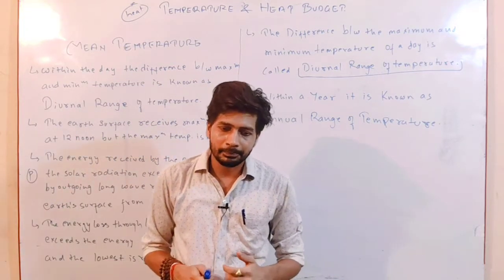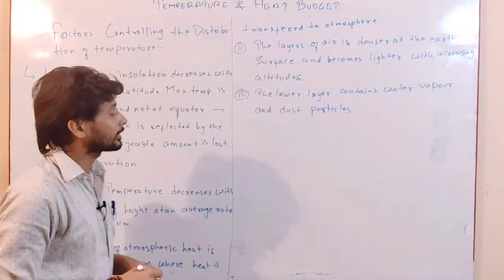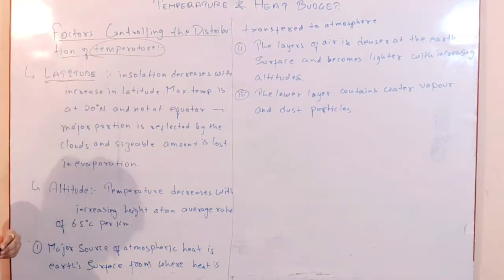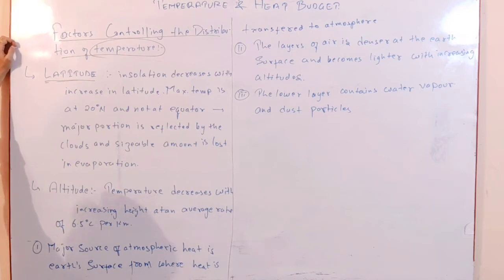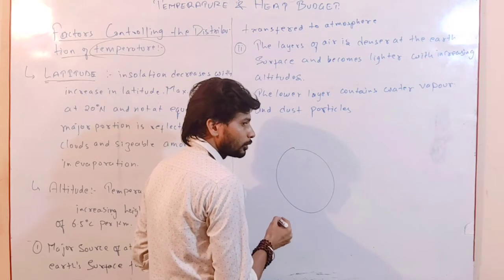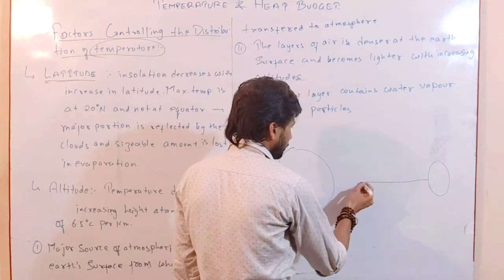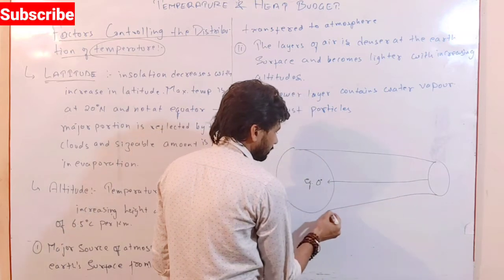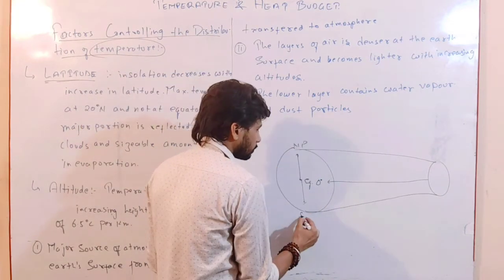Now I'll start a new topic: factors affecting the distribution of temperature. The first factor is latitude. Insolation decreases with the increase in latitude. Maximum temperature is at 20 degrees North, not at the equator. As you go from equator toward the poles — north pole and south pole — temperature decreases. At the equator temperature is maximum, and at the poles minimum.